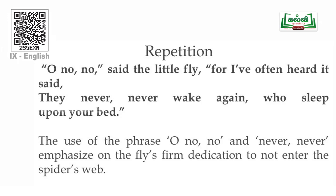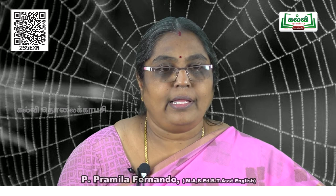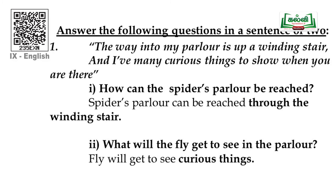Now we can go for a small comprehension test. 'The way into my parlour is up a winding stair. And I have many curious things to show when you are there.' How to reach the spider's parlour? It was a winding stair, so through the winding stair the spider's parlour can be reached. What will the fly get to see in the parlour if he goes there? It is curious things.